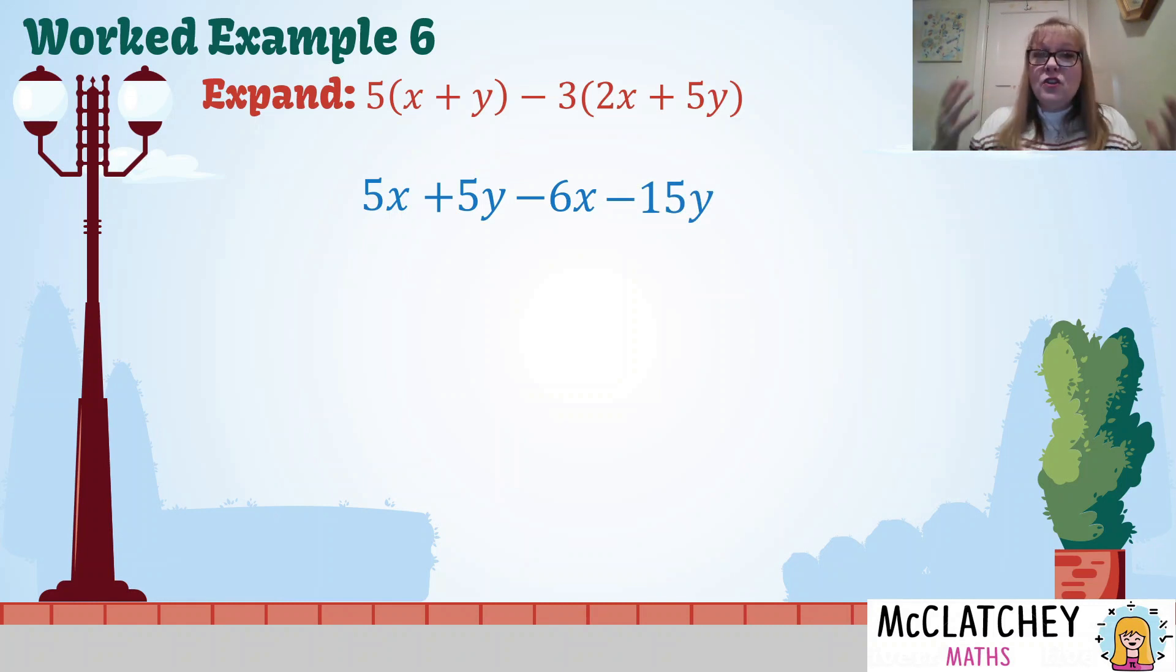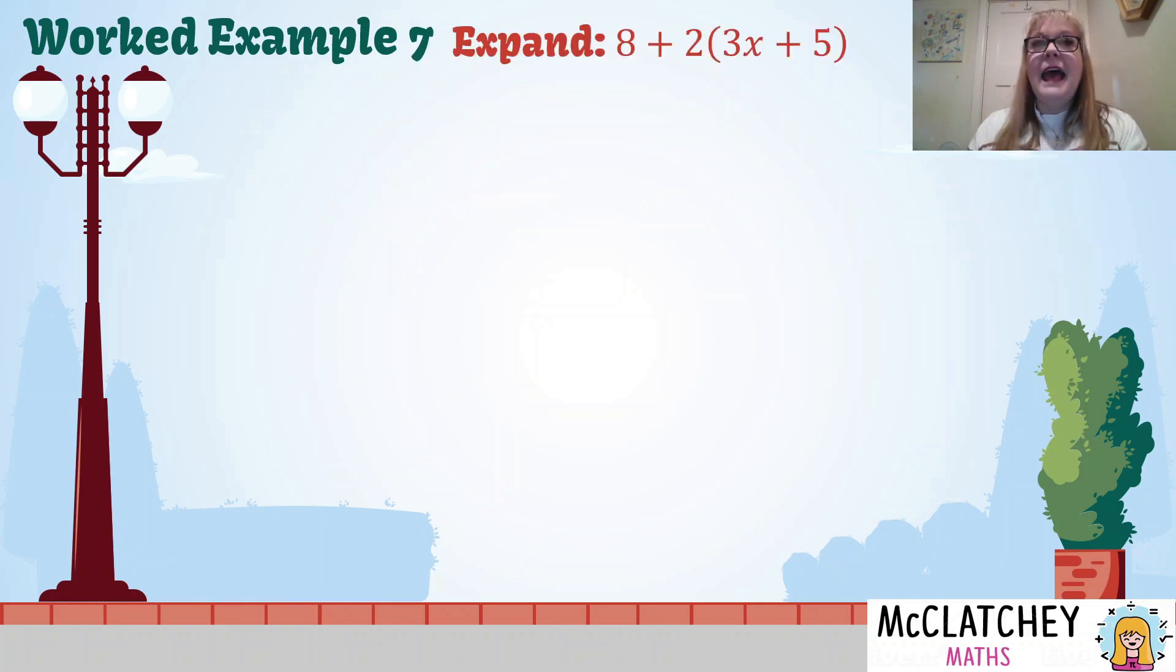Now you might be tempted to think you're done here, but you always need to simplify and collect those like terms, and we looked at that in previous videos. You're going to either put a circle or a square or highlight the first letter term that you've got and find its matches. So we've got 5x and takeaway 6x gives us negative x. And then what's outside the boxes, 5y take away 15y gives me minus 10y.